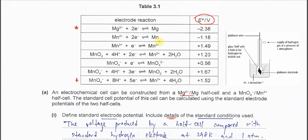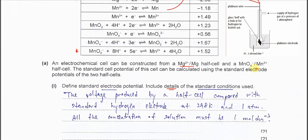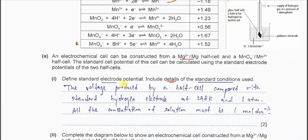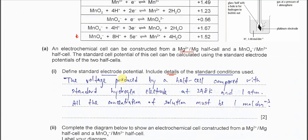These electrodes have different potentials. How do we get all these potentials? We get them when each electrode is connected to the SHE — the standard hydrogen electrode. When a half-cell or electrode is connected to the standard hydrogen electrode, we can determine its electrode potential. That's why when you define standard electrode potential, you must relate it to the standard hydrogen electrode.